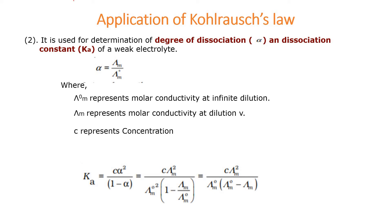In this video, we will take the second application of Kohlrausch's law, in which we are calculating degree of dissociation alpha. Degree of dissociation — which formula is: alpha is equal to molar conductance at given concentration divided by molar conductance at infinite dilution.